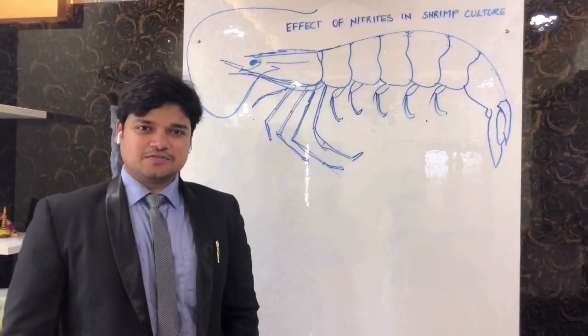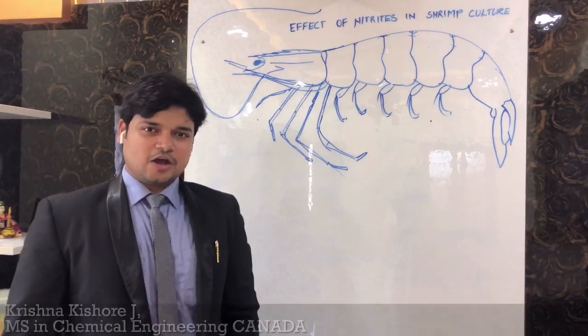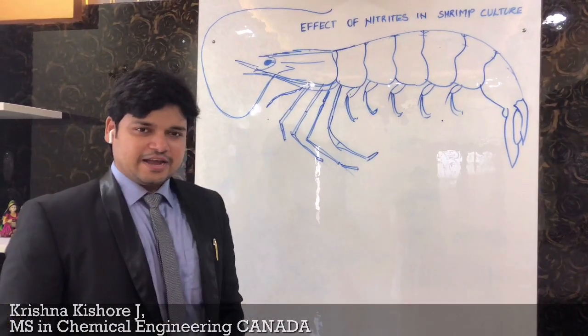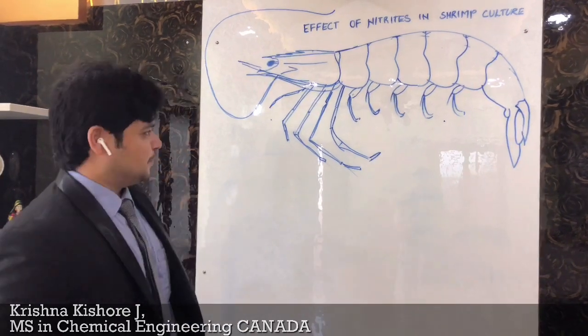Now we will discuss the effect of nitrites problem and how this nitrites is coming into our aquaculture ponds, mainly our shrimp ponds, and what are the things really happening.